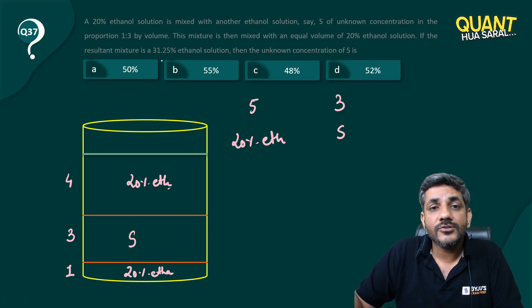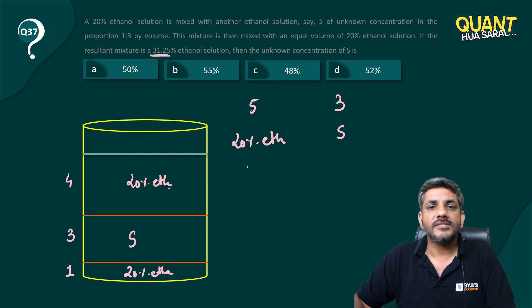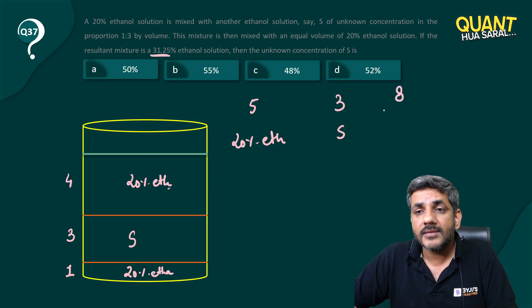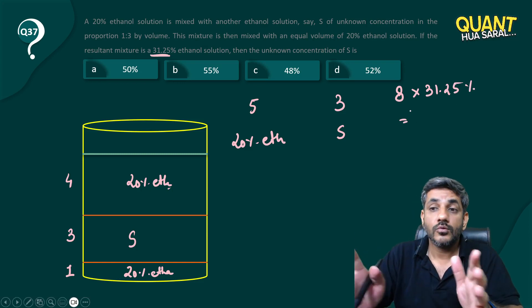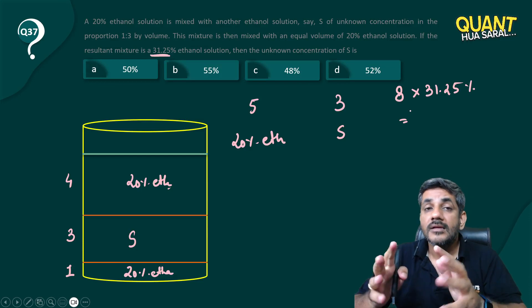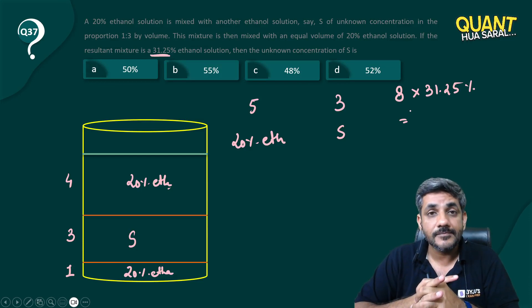It's not very difficult to calculate 31.25%. The simple reason for that is when you multiply 1.25 by 8, it is straightaway 10, right? And 30 by 8 is 240.